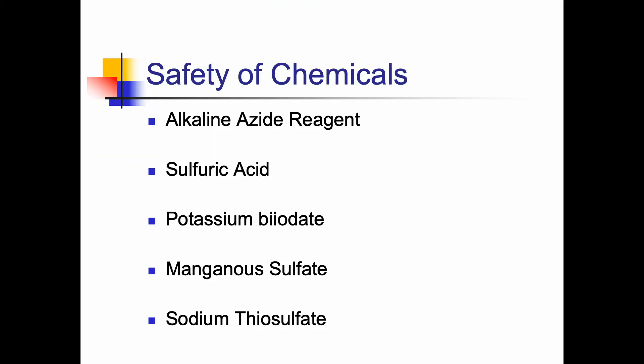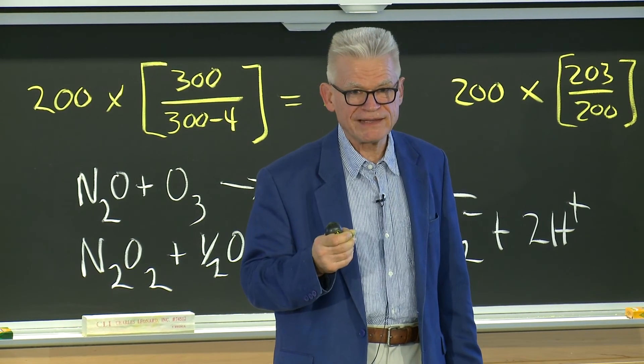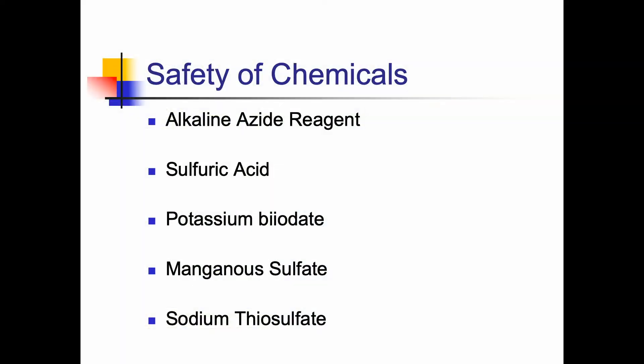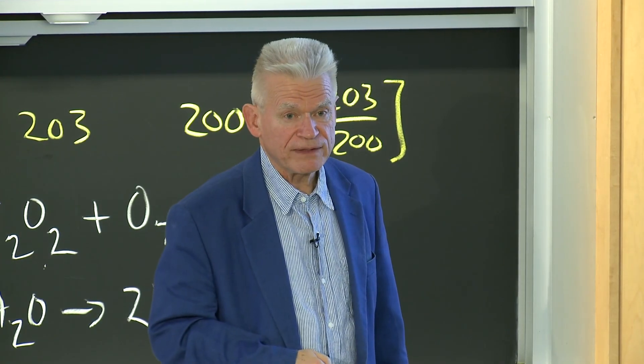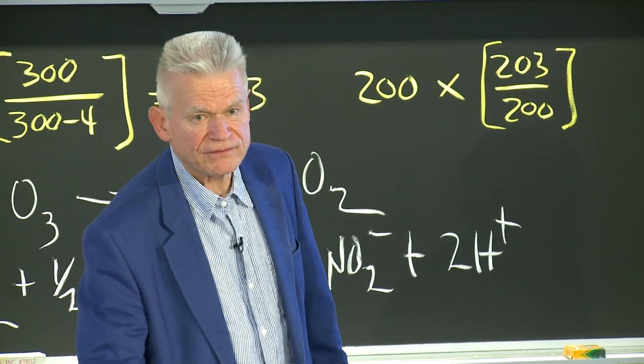Some safety notes on the chemicals. The most serious is the azide reagent — it's a neurological toxin, and if you ingest it, it can cause death. Sulfuric acid — you don't want it in your respiratory system. Manganese sulfate seems innocuous but attacks the central nervous system and targets blood and kidneys. Sodium thiosulfate is a respiratory irritant and can cause breathing problems. Potassium biiodate can burn your eyes. So be careful with all of these things. We'll see you Thursday for the last lecture in this series.